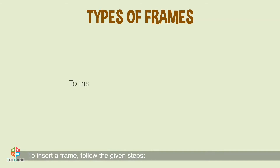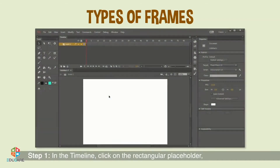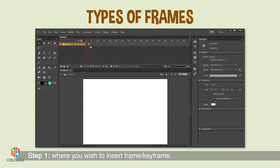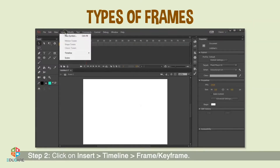To insert a frame, follow the given steps. Step 1: In the timeline, click on the rectangular placeholder where you wish to insert a frame or keyframe. Step 2: Click on Insert, Timeline, Frame or Keyframe.